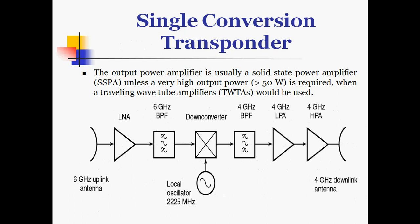The single conversion transponder has an uplink antenna working at 6 GHz. The transponder includes a low noise power amplifier, bandpass filter, and a down converter connected with a local oscillator at 2225 MHz, followed by a 4 GHz bandpass filter, low noise power amplifier, and high power amplifier given to the downlink antenna working at 4 GHz. The uplink frequency is 6 GHz and downlink is 4 GHz, and one down converter is used.